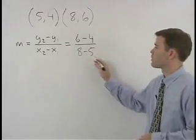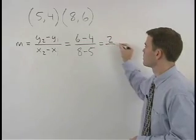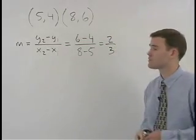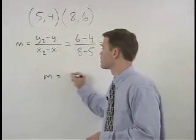So 6 minus 4 over 8 minus 5 simplifies to 2 over 3. So the slope of this line is 2 thirds.